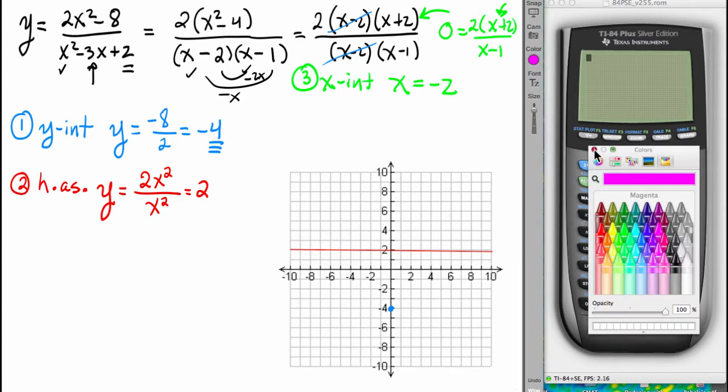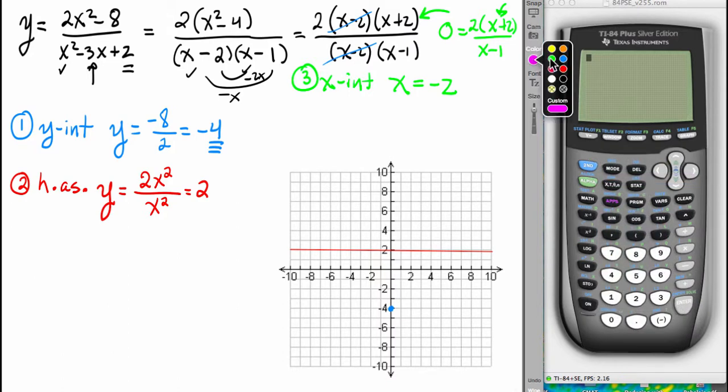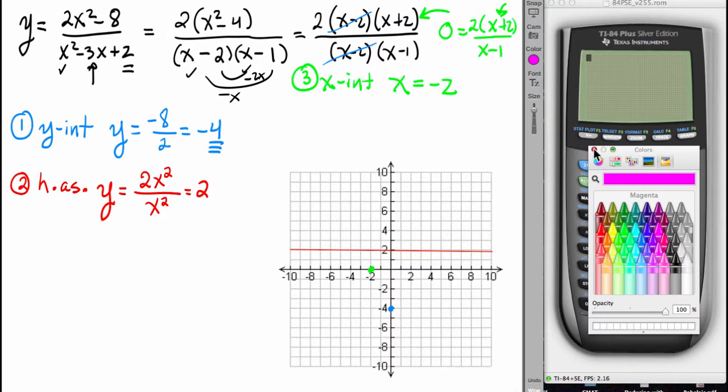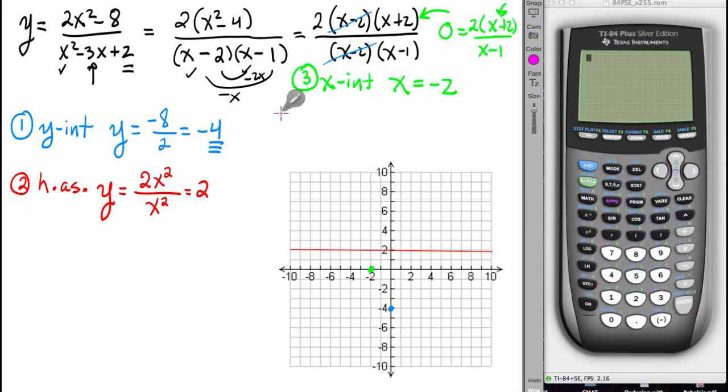Next, let's actually go ahead and put that x-intercept in. x equals negative 2. And then let's continue on into a fourth feature,